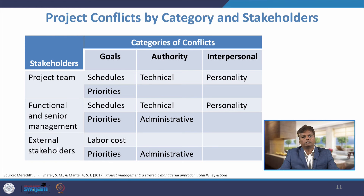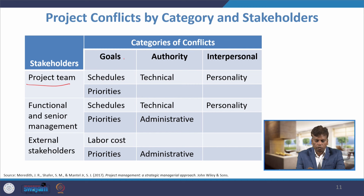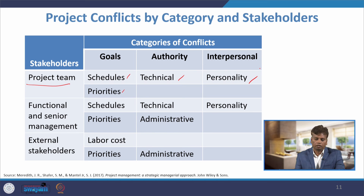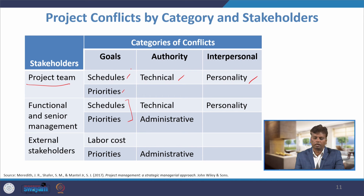Now we will see project conflicts by category and stakeholders. The project team may have conflicts with respect to goals, schedules, and priorities. On authority, there may be technical issues that lead to conflict, and different personal feelings among team members lead to interpersonal conflict. For functional and senior management, conflicts may arise due to schedule and priorities, which fall under the category of goals-related conflicts.